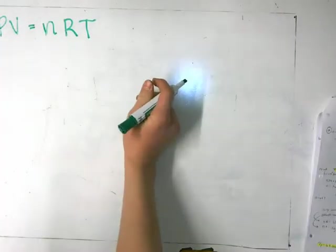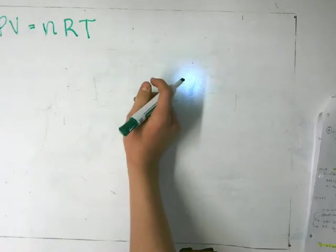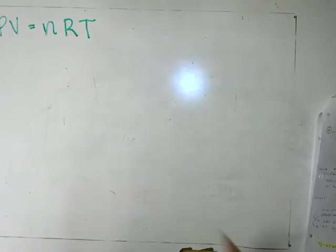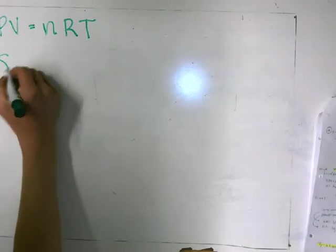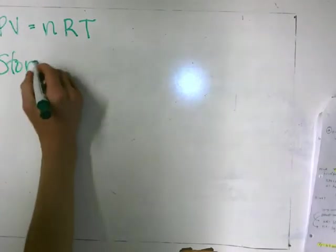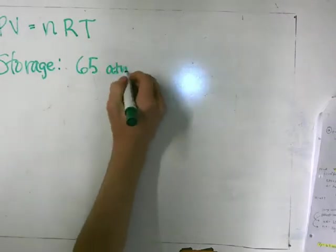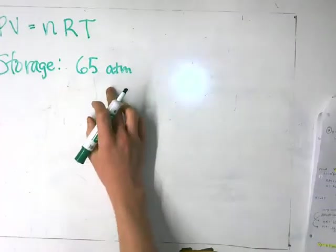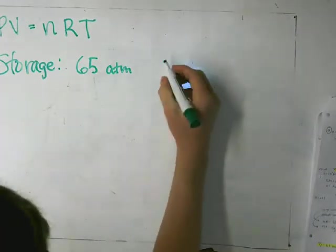In the problem, we are given the following information. Oxygen for hospital patients is kept in special tanks, where the oxygen has a pressure of 65 atmospheres in storage, and the temperature is 288 Kelvin.